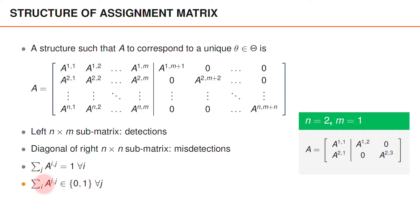The sum of the rows in each column must be equal to either 0 or 1. A detection cannot be associated to more than one object, so this value cannot be larger than 1. It can be 0 because in a valid data association, there may be measurements not associated to any object. Also, if an object is associated to a measurement, it cannot simultaneously be associated to a misdetection, so the column sum for that misdetection must be 0.